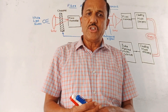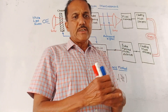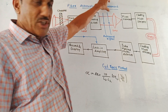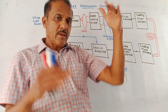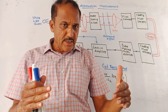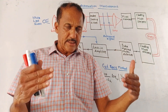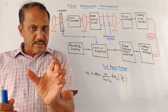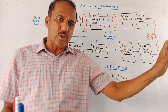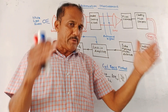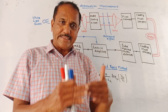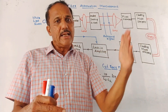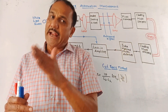Hello and welcome back to this channel. Dear students, today's session is fiber attenuation measurement. Attenuation is the reduction in signal strength. Whenever optical signals are traveling through the fiber optic cable, because of various reasons, the strength of the signal gets reduced. That is called attenuation.